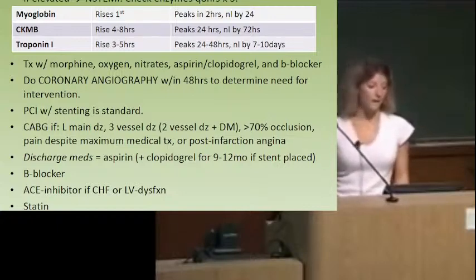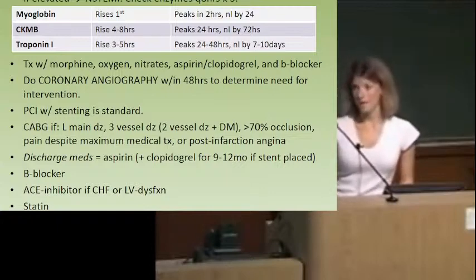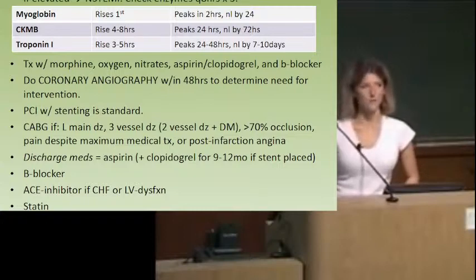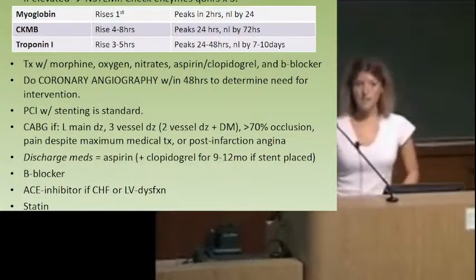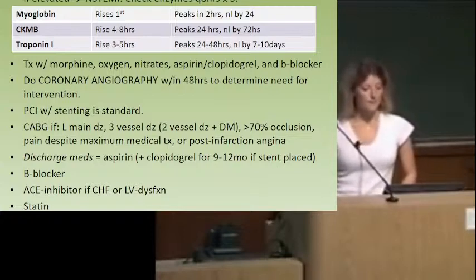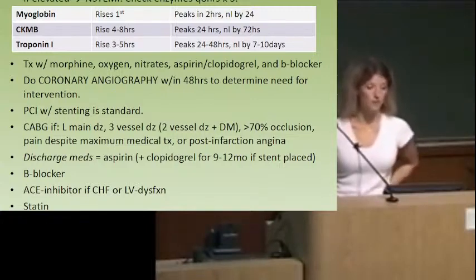Coronary angiography tells us whether we need to do some kind of intervention — stent or CABG. Stent is really the standard unless your patient has certain factors making CABG preferred. When do you do CABG instead of PCI? If you've got left main disease, three-vessel disease, or two-vessel disease in a diabetic. Also if there's greater than 70% occlusion, if they're still really symptomatic on maximum medical treatment, or if they have terrible angina after an infarction suspicious for re-infarction.